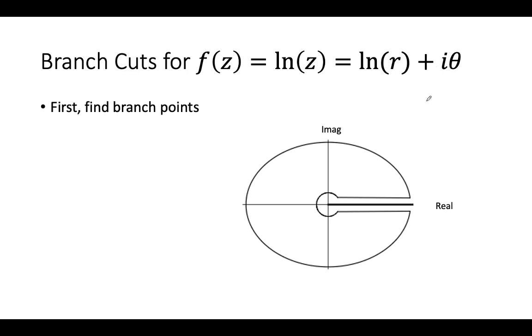What happens is first you have to find the branch points. We can see immediately, every time you go around by theta equals 2 pi, we'll add a factor of 2 pi i to the function, so it's not single-valued.